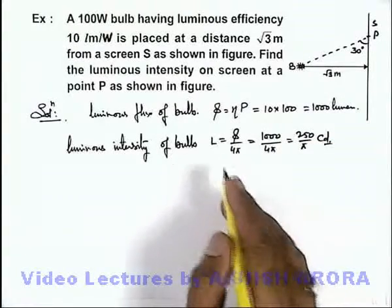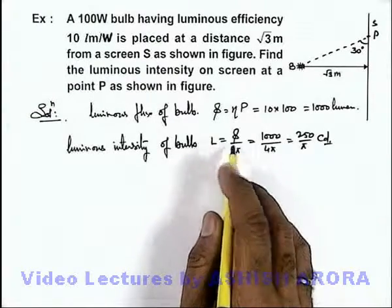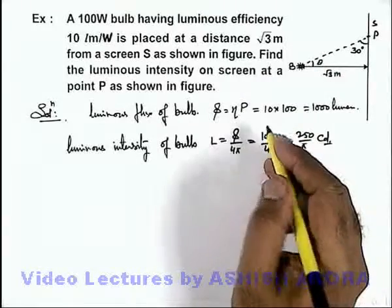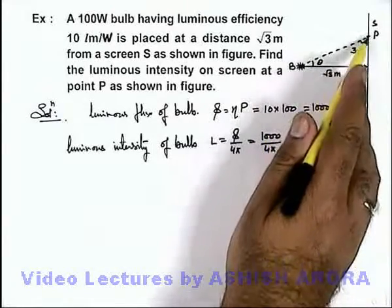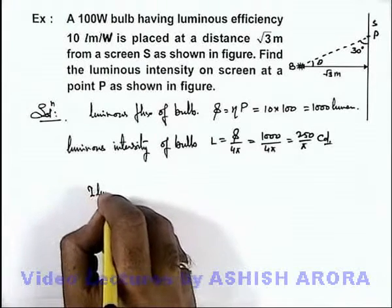And as we are having the luminous intensity of bulb in all directions, then at point P, if this angle is taken as θ, using Lambert cosine rule we can find out the illuminance.